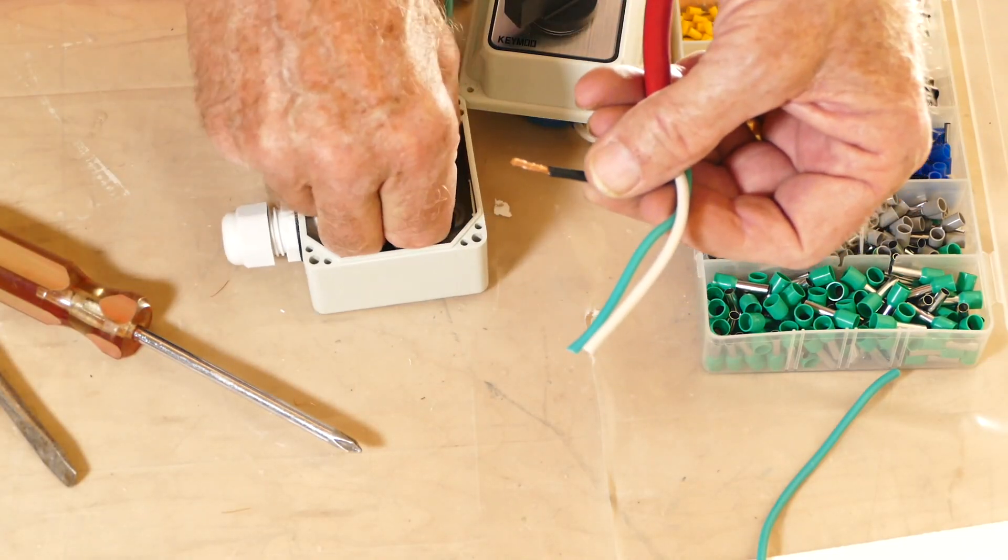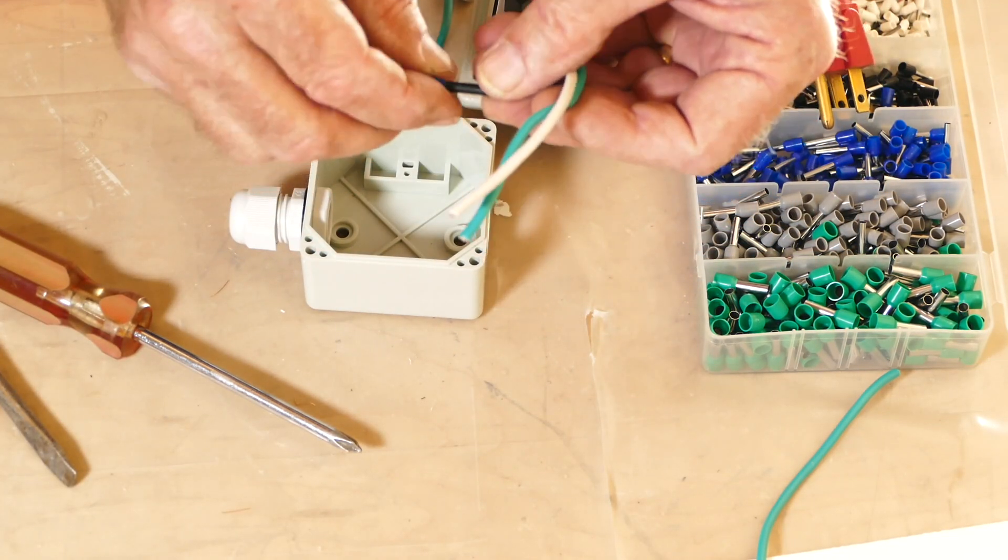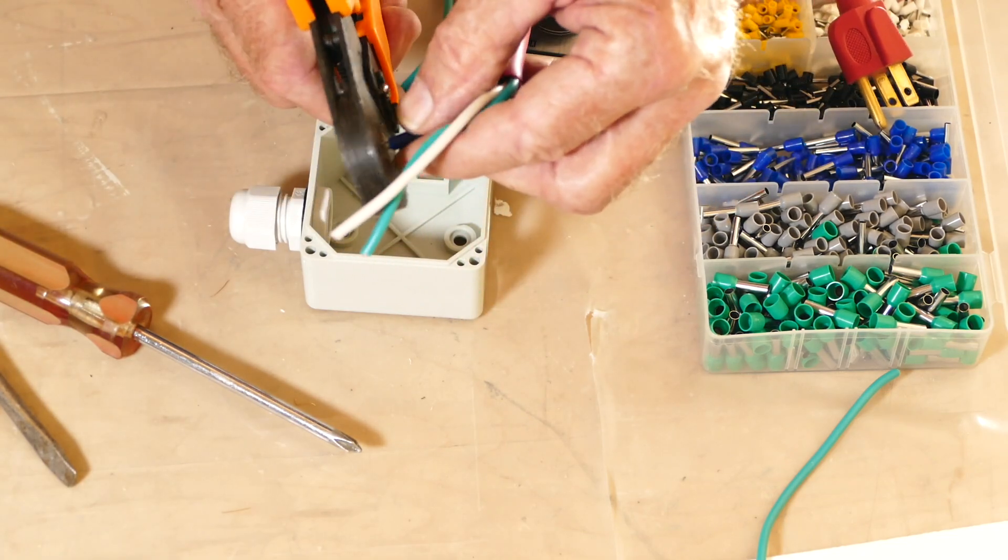Crimp the terminals on all the conductors, then slide each of the cables through the glands and make the connections to the switch.